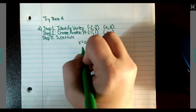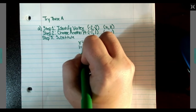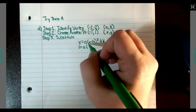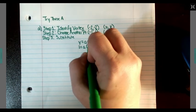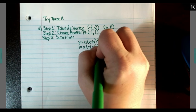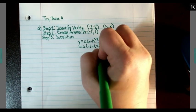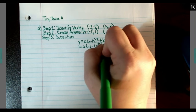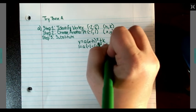We've got 1 equals A times negative 1 minus a negative 2 squared plus negative 2.